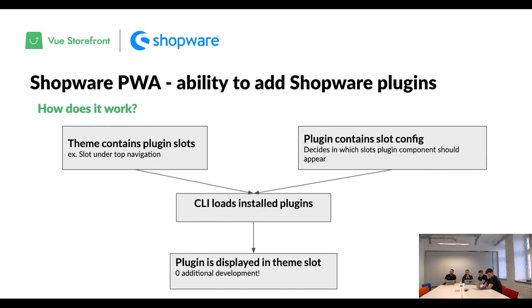How does it work exactly? Our theme contains slots — in this case, a slot under the top navigation bar. The plugin contains configuration specifying which slot it wants to be injected into. Our CLI loads plugins from the ShopRate PWA instance and displays them in the selected slots. That's why it requires no development work to configure plugins installed from the ShopRate marketplace. There will be comprehensive documentation on how to create plugins for PWA.